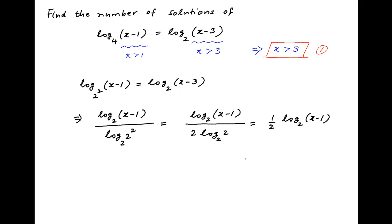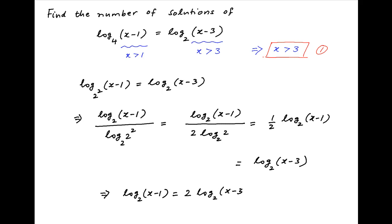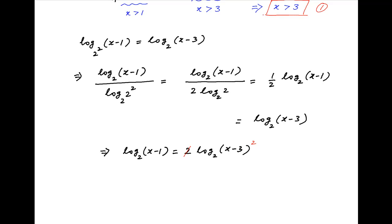And this is equal to the right hand side, which is log of (x minus 3) to the base 2. The given equation therefore becomes log of (x minus 1) to the base 2 is equal to 2 times log of (x minus 3) to the base 2. Using properties of logarithms, the right hand side simplifies to log of (x minus 3) squared to the base 2.